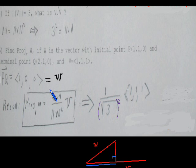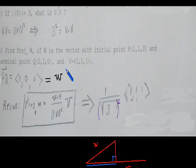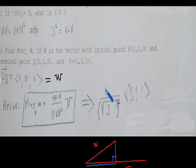We apply the projection formula: the projection of w on v equals (w dot v divided by the norm of v squared) times v. The dot product w dot v equals 1. The norm of v is the square root of 1² plus 1² plus 1², which is the square root of 3, so the norm squared is 3. We multiply the constant 1/3 by the vector v, which is (1, 1, 1), giving us the projection.